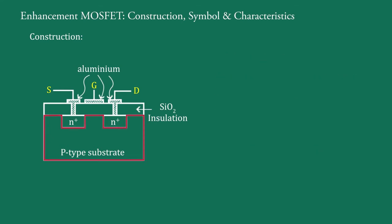It consists of a lightly doped P-type substrate into which two heavily doped N-plus regions are diffused. These two N-plus regions act as source S and drain D. A thin layer of insulating silicon dioxide, SiO2, is made over the surface of the substrate. It is this one.